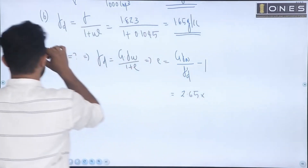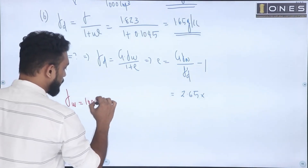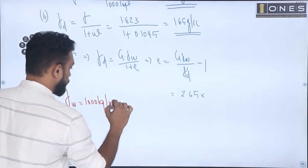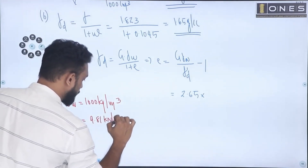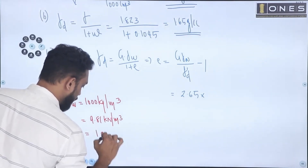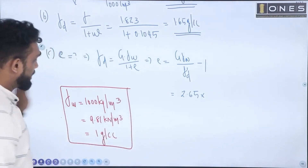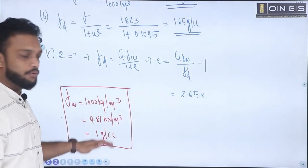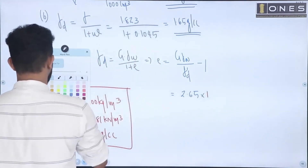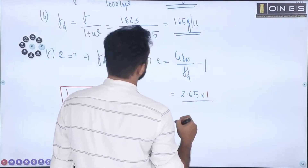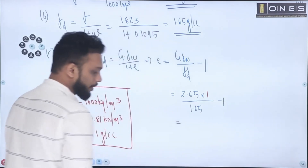Gamma w, the unit weight of water, can be expressed in different units: 1000 kg per m³, 9.81 kN per m³, or 1 gram per cc. Substituting into the void ratio formula: e equals (2.65 times 1) divided by 1.65, minus 1.